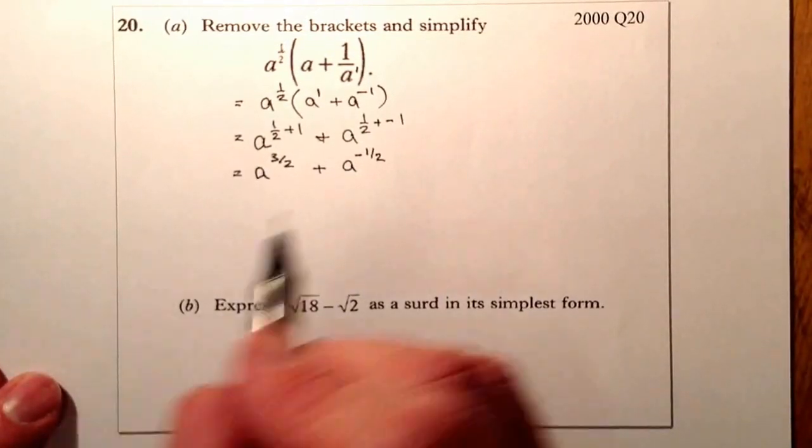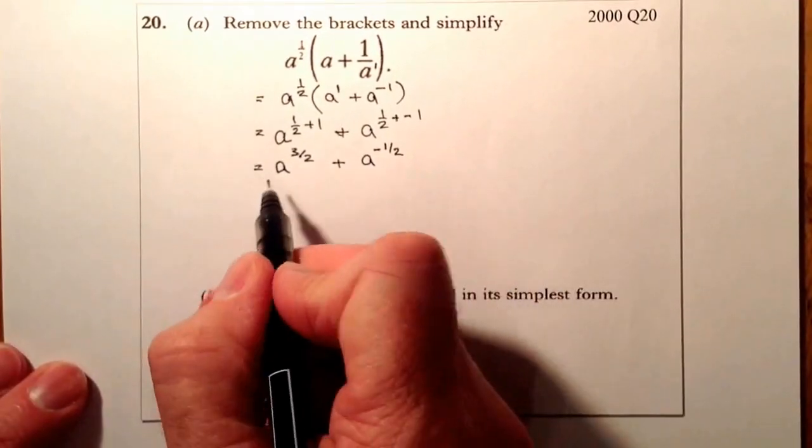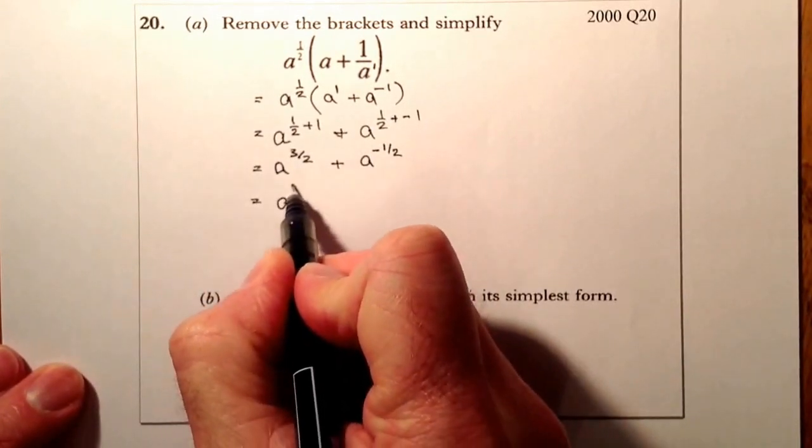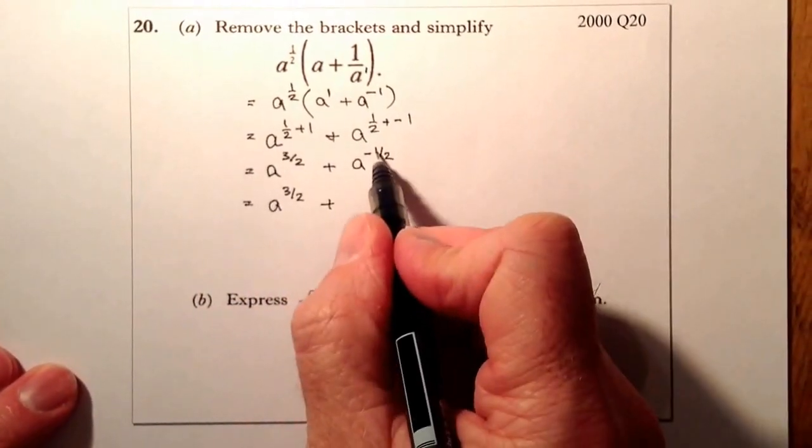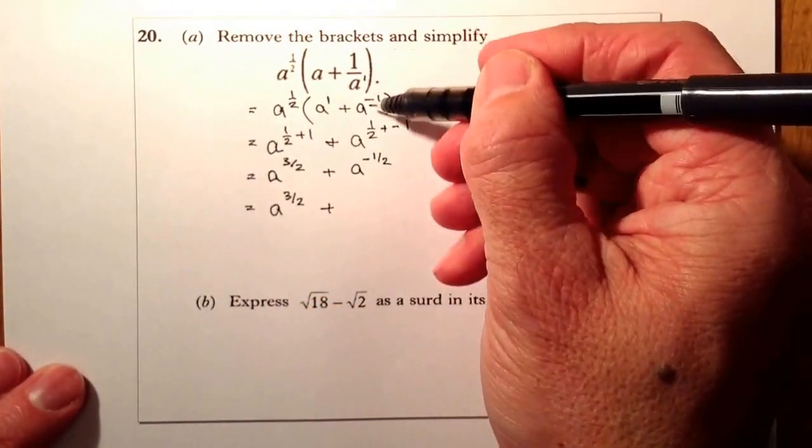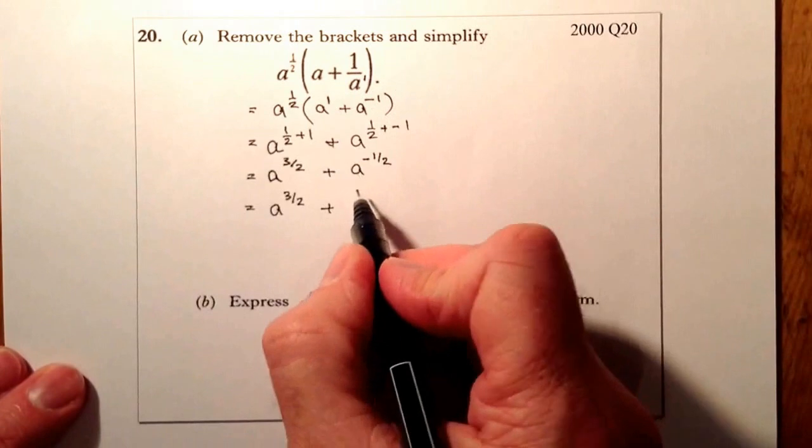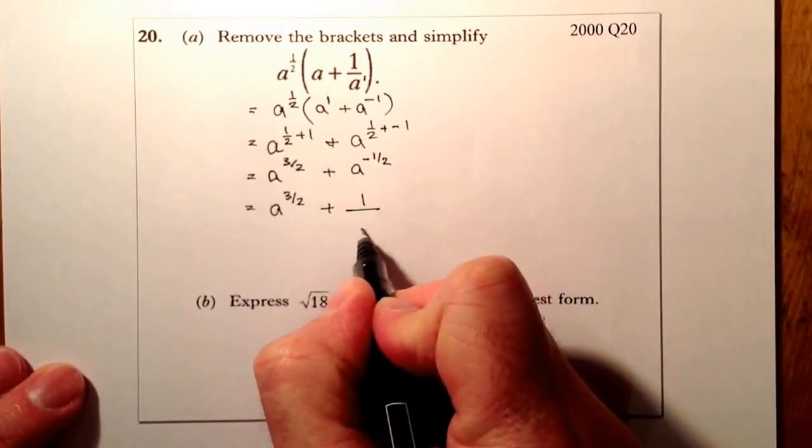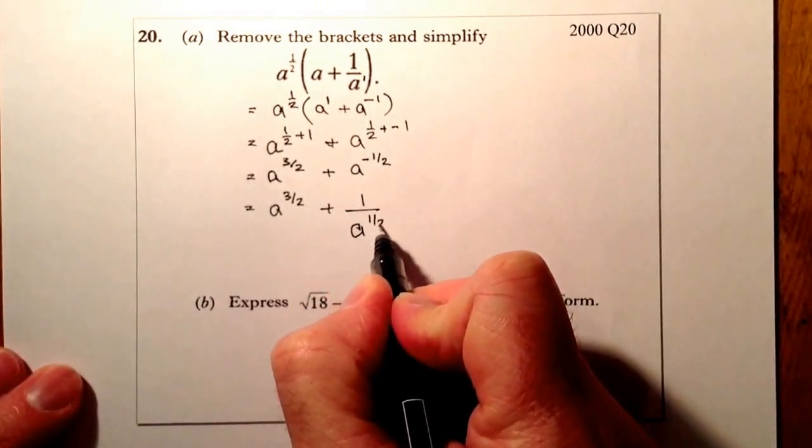If it had asked me to write it with a positive index, then what I would have to do, this one would be okay for me, but this one here, I would need to take that back down to the denominator, same way as I changed this one here about, and what I'll have is 1 all over a to the power of 1 half.